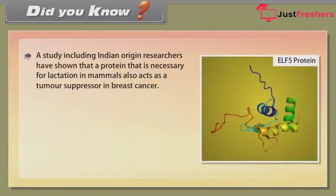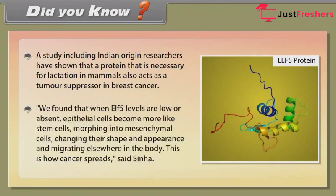Did you know? A study including Indian-origin researchers has shown that a protein necessary for lactation in mammals also acts as a tumor suppressor in breast cancer. When ELF5 levels are low or absent, epithelial cells become more like stem cells, morphing into mesenchymal cells — changing their shape and appearance and migrating elsewhere in the body. This is how cancer spreads, said Sinha.